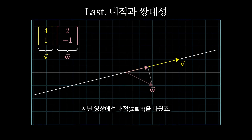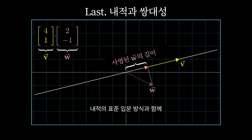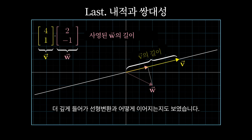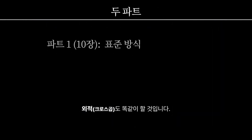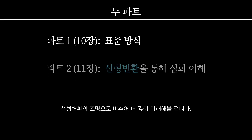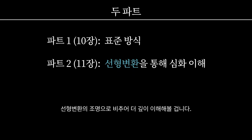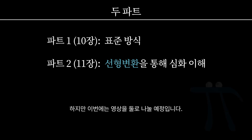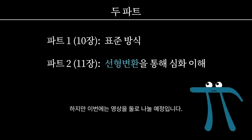Last video I talked about the dot product, showing both the standard introduction to the topic as well as a deeper view of how it relates to linear transformations. I'd like to do the same thing for cross products, which also have a standard introduction along with a deeper understanding in the light of linear transformations, but this time I'm dividing it into two separate videos.